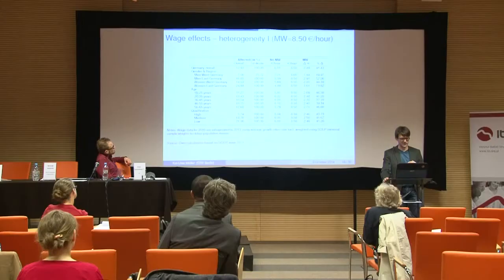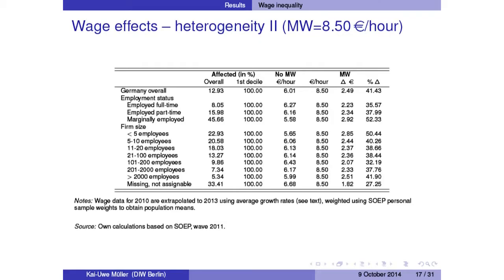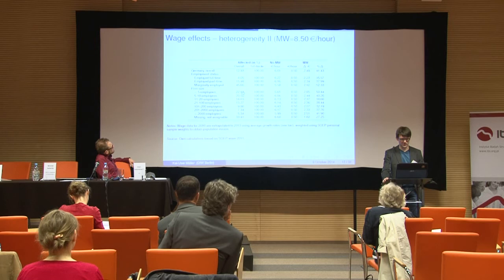Regarding age groups, the youngest age group is by far the most affected. In terms of qualification level, you see the expected pattern. By type of contract, full-time employed would be much less affected than marginally employed — in our sample, about half of the marginally employed working in mini-jobs would be affected by the minimum wage at €8.50. Also, crucially, it depends on firm size: there's a monotonic relationship, with larger firms less and less affected by the minimum wage. We can reproduce these well-known heterogeneity findings across groups.